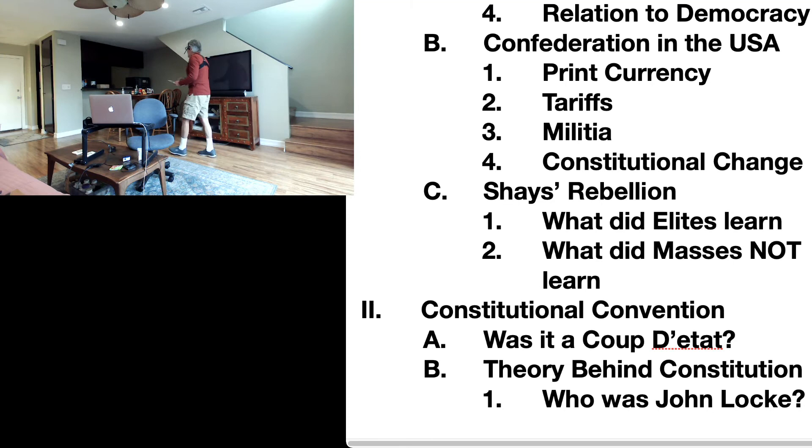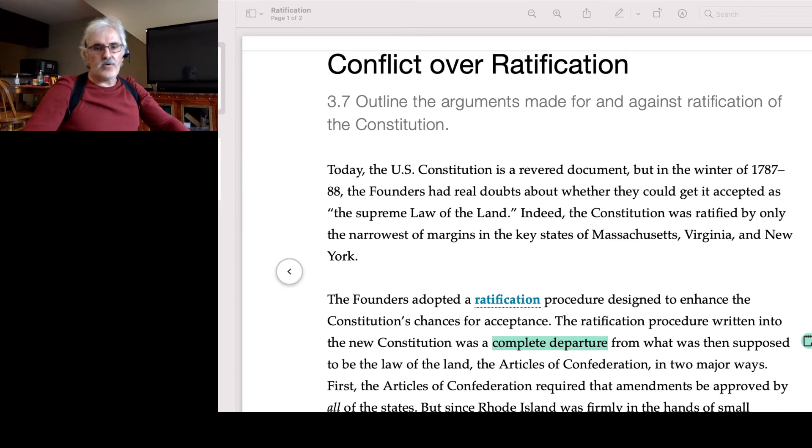The question is: Is there evidence to support this thesis that what the Founding Fathers did at the Constitutional Convention was a coup d'etat? All right, let's look at the evidence. This is a segment taken from your book called Conflict Over Ratification in Chapter 3. And in it, we find some evidence, even though it's couched in some Orwellian language, we do find some evidence that this was indeed a coup d'etat.